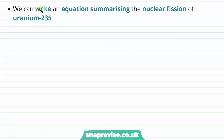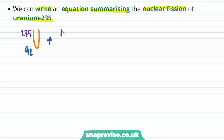We can write this out more succinctly in an equation that summarises the nuclear fission of uranium-235. Uranium-235 has a nucleon number of 235 and a proton number of 92. We add a neutron with nucleon number 1 and proton number 0, forming uranium-236 with nucleon number 236 and proton number 92, which then splits to form two product nuclei.